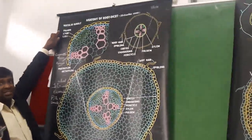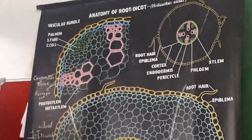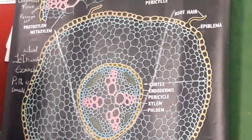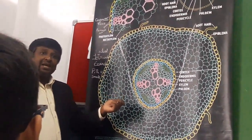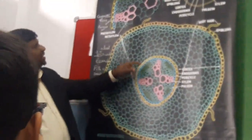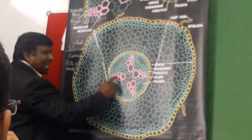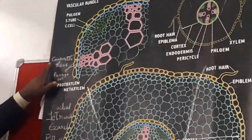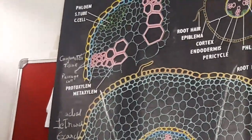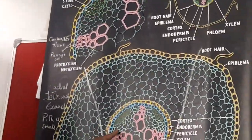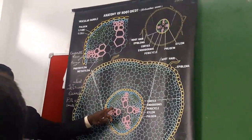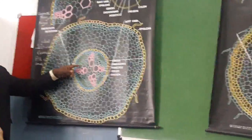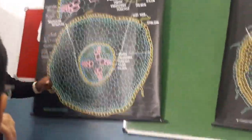Phloem consists of sieve tubes and companion cells — the dotted structures are sieve tubes, surrounded by companion cells. They are also associated with parenchyma, called phloem parenchyma, and with sclerenchymatous phloem fibers. The parenchyma found between the xylem and phloem patches is called conjunctive tissue. So the parenchyma between the xylem and phloem patch is conjunctive tissue — you can remember it by the name conjunctivitis, though that is a different context. This is the anatomy of the dicot root.